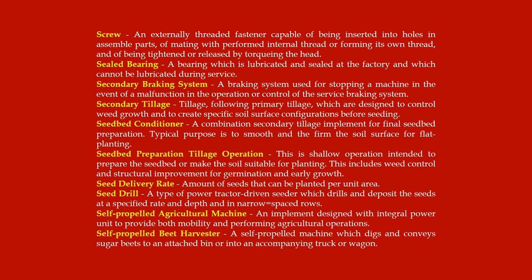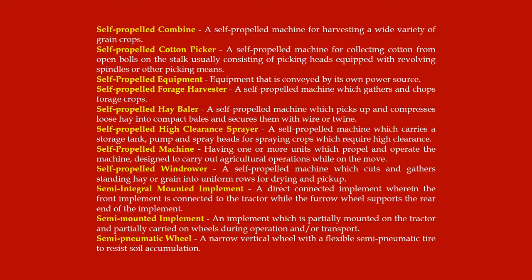Self-propelled beet harvester: a self-propelled machine which digs and conveys sugar beets to an attached bin or into an accompanying truck or wagon. Self-propelled combine: a self-propelled machine for harvesting a wide variety of grain crops.